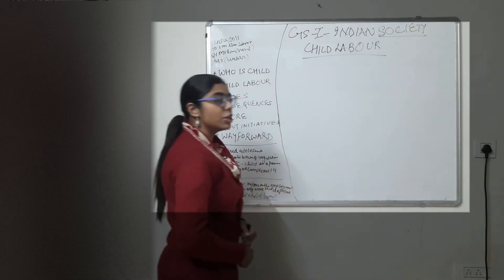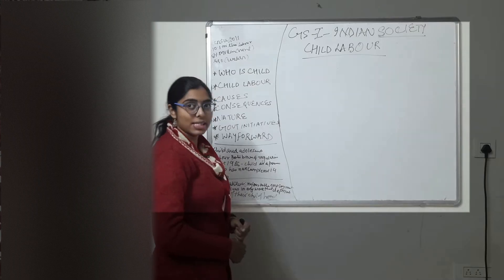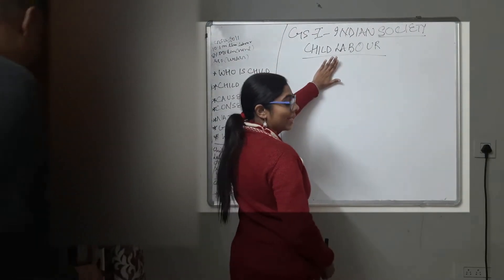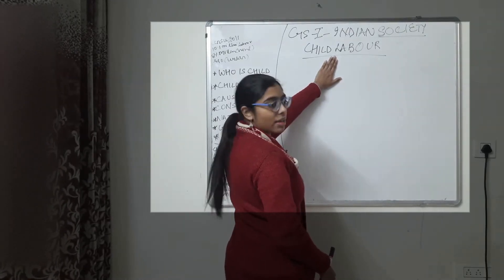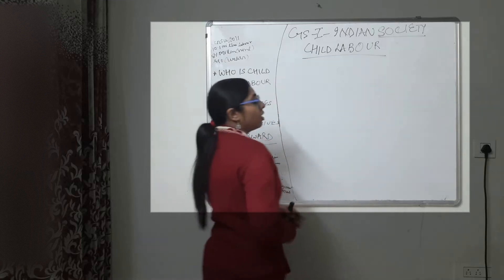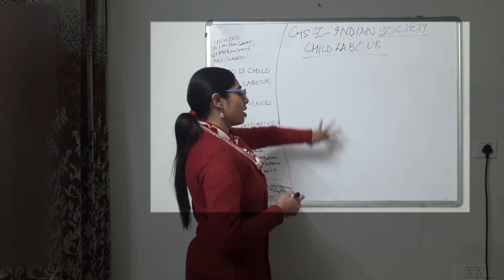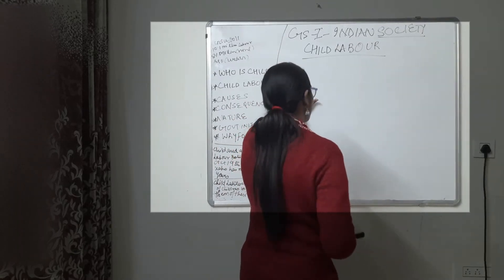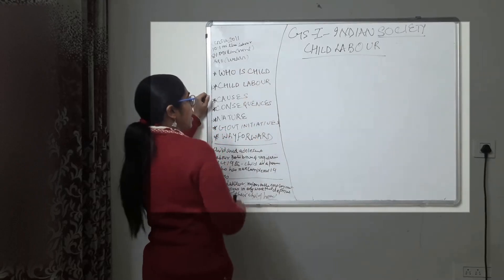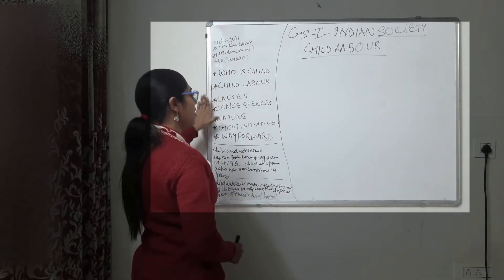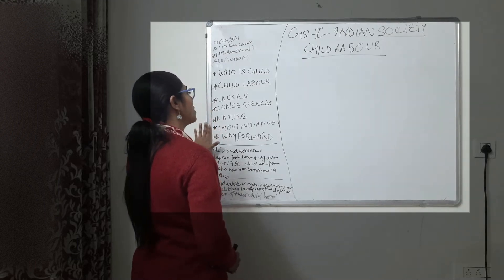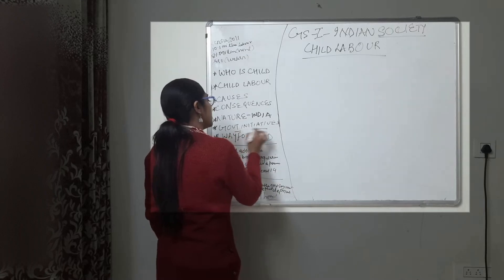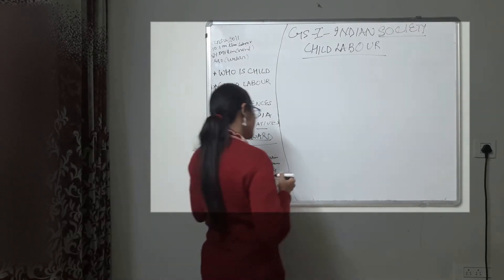Hi guys, welcome back to the channel. Today in this video we will be covering General Studies Paper 1. The segment we are covering is Indian Society, and under the subheading we are covering child labor. Child labor is a term everybody is aware of - what is बाल श्रम - but we will be dealing with it academically. We will be talking about who is a child, what is child labor, its causes, consequences, nature, government initiatives, and way forward.